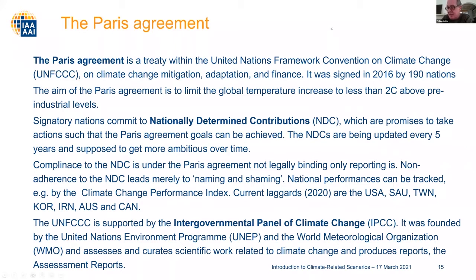A very important part of this organization is the IPCC — the Intergovernmental Panel on Climate Change. They collect, assess and curate all research globally being done on climate change, and publish frequently assessment reports which give the newest data of research and observations on climate change. Also important for actuaries are the RCPs — the Representative Concentration Pathways — which are covered on the next slide.